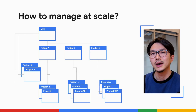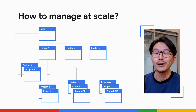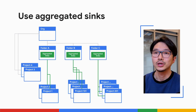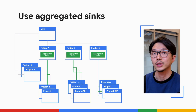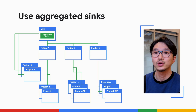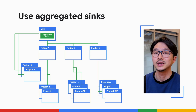You might ask: I'm managing a very complex cloud environment with hundreds or maybe thousands of projects — how can I manage this at scale? Aggregated sinks are your answer. Aggregated sinks are log sinks that you can create at the folder or even at the organization level. They will aggregate all the logs from their child resources to give you a central point of control for making log selection and routing decisions from a vast number of sources.